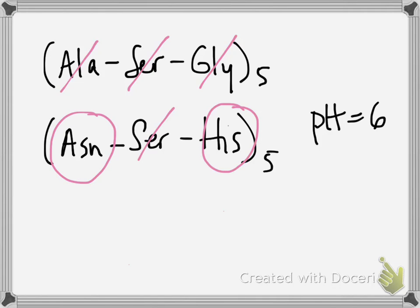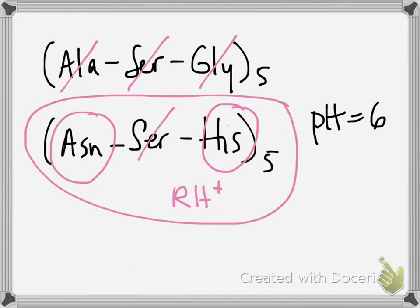And then histidine at pH 6 is going to be half deprotonated, half protonated. And so the protonated form is going to be able to interact with water and promote solubility as well. The pKa of that group is 6.0. So because of those things, you would pick this peptide as being more soluble.